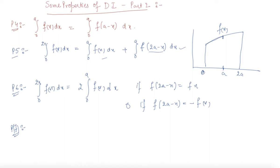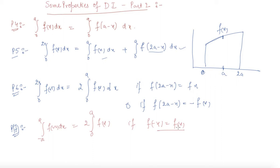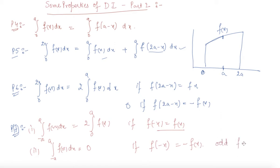Property P7 is based on even and odd functions. It states that the integral from minus a to a of f(x) dx equals 2 times the integral from 0 to a of f(x) dx, if f(minus x) equals f(x), which is the property of an even function. The second part states that the integral from minus a to a of f(x) dx equals 0 if f(minus x) equals minus f(x), which is the property of an odd function.